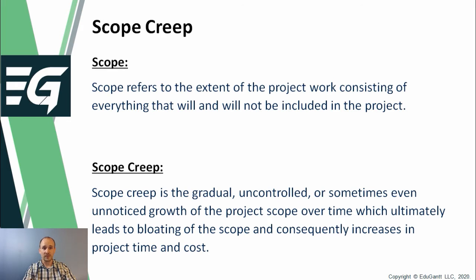Now, carefully consider this definition and note the use of the word uncontrolled. Scope creep and scope changes are not the same thing. Projects come with immensely high levels of uniqueness and uncertainty, and as such we expect that without fail there will always be changes to the project constraints. Changes to the project scope baseline do not necessarily contribute to project failure, that is, if they are properly investigated and formally authorized by means of a structured change management system. Scope creep specifically refers to changes to the project scope baseline that were not assessed for their impact and formally authorized by individuals or groups with the right level of authority.